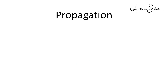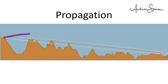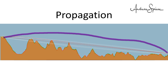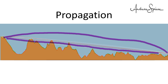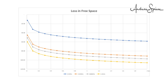One aspect is propagation. Low frequencies penetrate objects better than high frequencies, and low frequencies bend around hills. Higher frequencies behave much more like light — they need a line of sight. Higher frequencies also lose more power over distance. Here are the curves for 433 MHz, 868 MHz, and 2.4 GHz — these are standard frequencies used by makers. For comparison, I added the curve for 10 MHz.